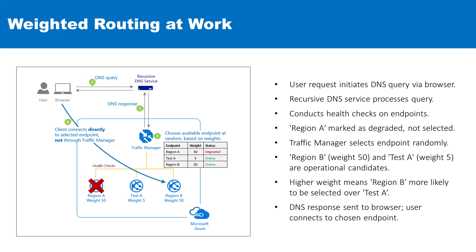Instead, it selects an available endpoint at random with the likelihood of selection based on the assigned weights. Region B and Test A, both operational with weights of 50 and 5 respectively, are then considered. Given these weights, Region B is 10 times more likely to be chosen than Test A.